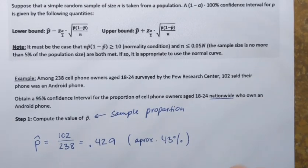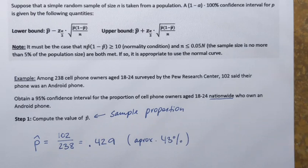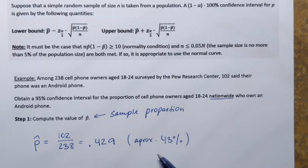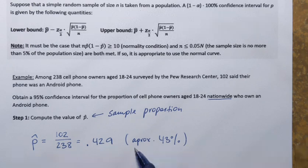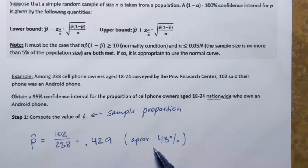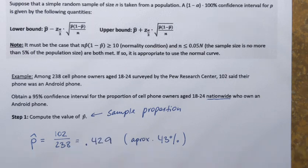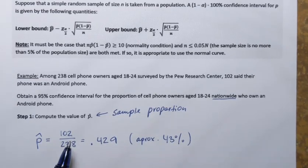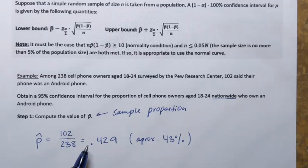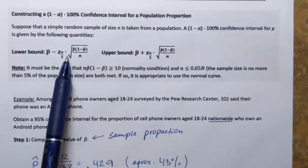Can we say that nationwide 43 percent of people of that age own an Android phone? We can't say that, because if we obtained a different sample, the sample proportion might be different. Sample proportions vary from sample to sample; we cannot guarantee that the population proportion is the same. However, we can use this number to estimate the population proportion, so we're going to construct an interval based on this sample proportion such that we will be 95 percent confident that the population proportion is in that interval.